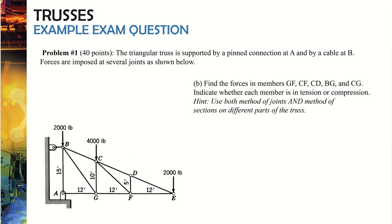After identifying zero force members, the exam question asks to solve for forces in members GF, CF, CD, BG, and CG. We can make one section cut through GF, CF, and CD, which is advantageous. Since DF and CF are zero force members, we can use that information to simplify our solution for the remaining members.